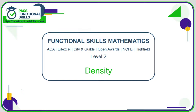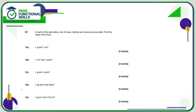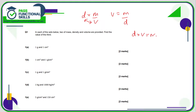Let's take a look at density. All of these questions are calculator questions. In each of the sets below, two of mass, density, and volume are provided - find the value of the third. The most important thing is to remember that density is mass over volume. We can flip the D and the V around, so volume is mass divided by density, and density multiplied by volume equals the mass.